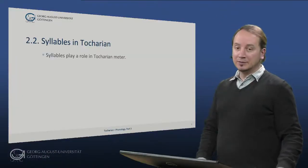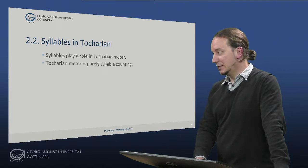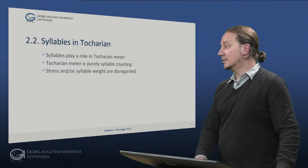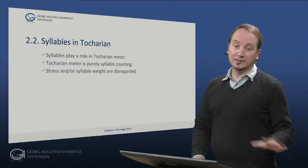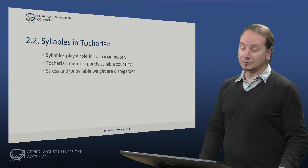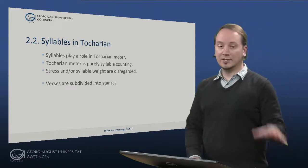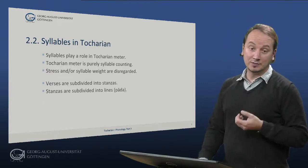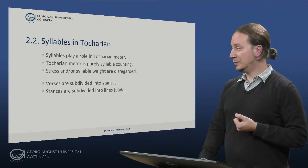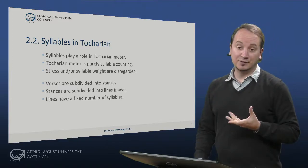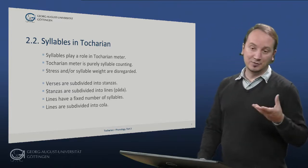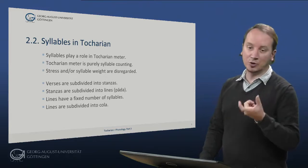So let's turn to Tocharian meter. Syllables play a role in Tocharian meter. Tocharian meter is purely syllable counting, that means that stress and or syllable weight are disregarded for metrical purposes. Verses are subdivided into stanzas. Stanzas are subdivided into lines or padas, which is the Sanskrit name. Lines have a fixed number of syllables as we will see, and lines can be further subdivided into smaller units called cola.